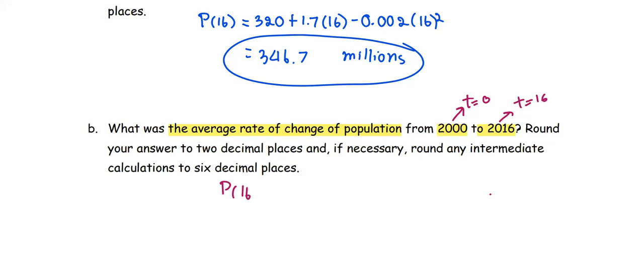Which is P(16) - P(0) divided by 16 - 0. We already computed the population at the year 2016 in Part A. The number came out to three decimal places, not up to six decimal places, so we're going to return to that form, which is 346.688, and then subtracted by P(0).